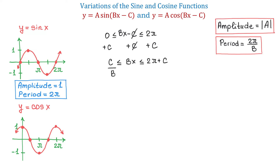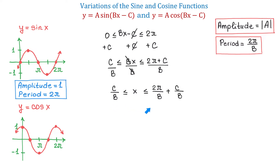Now we divide all three parts by b. On the left we get c over b, in the middle b and b cancel to give x, and on the right we get 2 pi over b plus c over b. So the function completes one full cycle when x changes from c over b to 2 pi over b plus c over b. This means that c over b represents the x-coordinate where the cycle starts, and 2 pi over b plus c over b represents where the cycle ends. The expression c over b is called the phase shift.